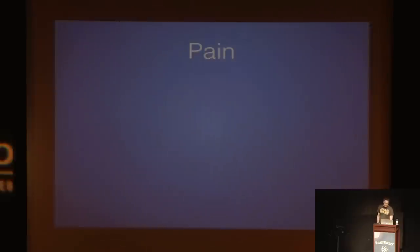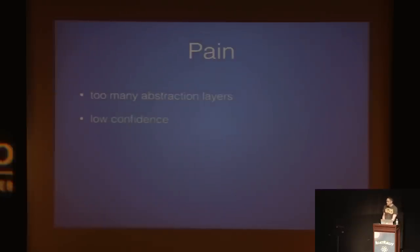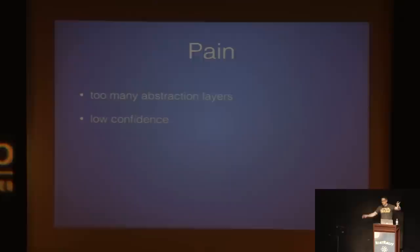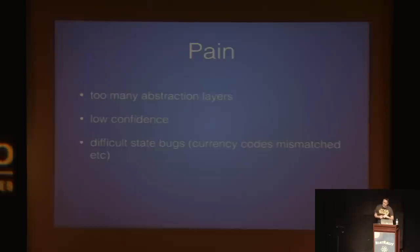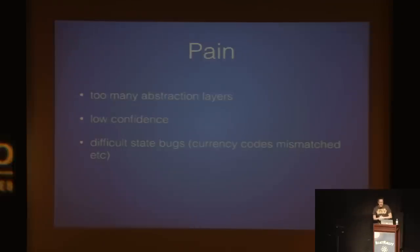Some of the issues we ran into: way too many abstraction layers. We had low confidence that when we would fix something over here, it would stay fixed, or that fixing something here wouldn't break something over there. And we had a lot of weird and difficult state bugs — you would select a currency code, go forward one page, maybe go back, and the currency code had been changed. It was very painful to troubleshoot.